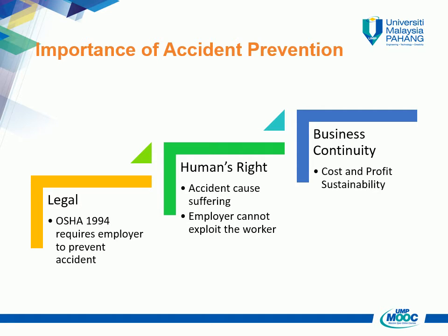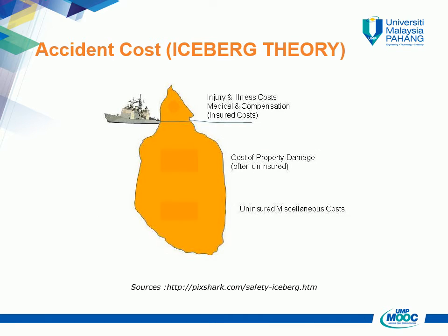Let's revisit the iceberg theory. The tip of the iceberg is normally an insured cost — the company can rely on insurance to cover those expenses. What lies beneath the surface is a bigger portion of expenses borne by the company itself, such as property damage, overtime pay, and lost wages paid to injured employees. Hidden cost is normally three to five times higher than the direct cost. No wonder accidents can sometimes be unaffordable.